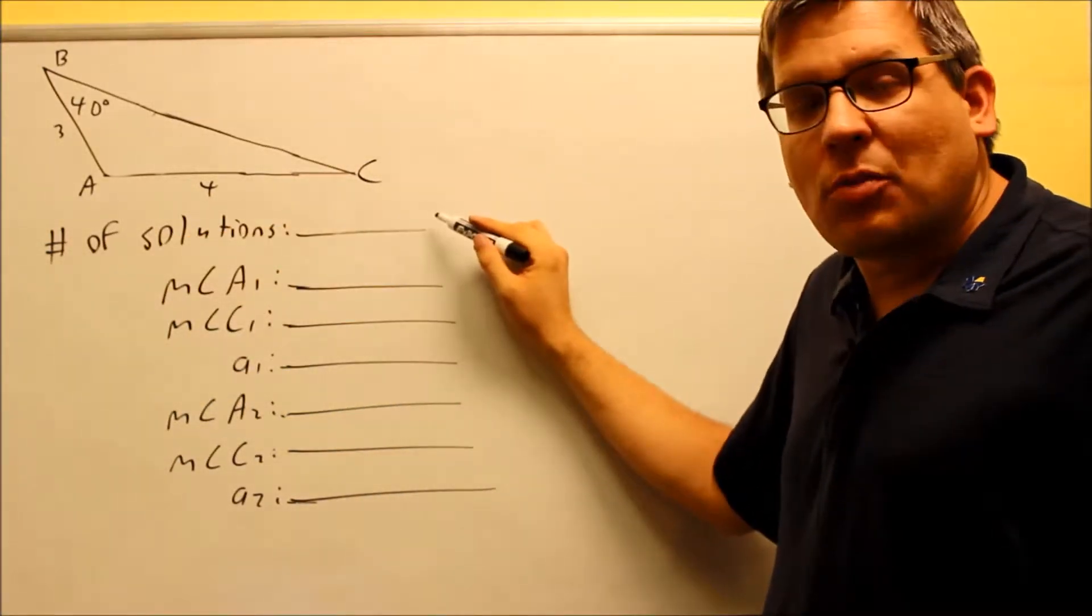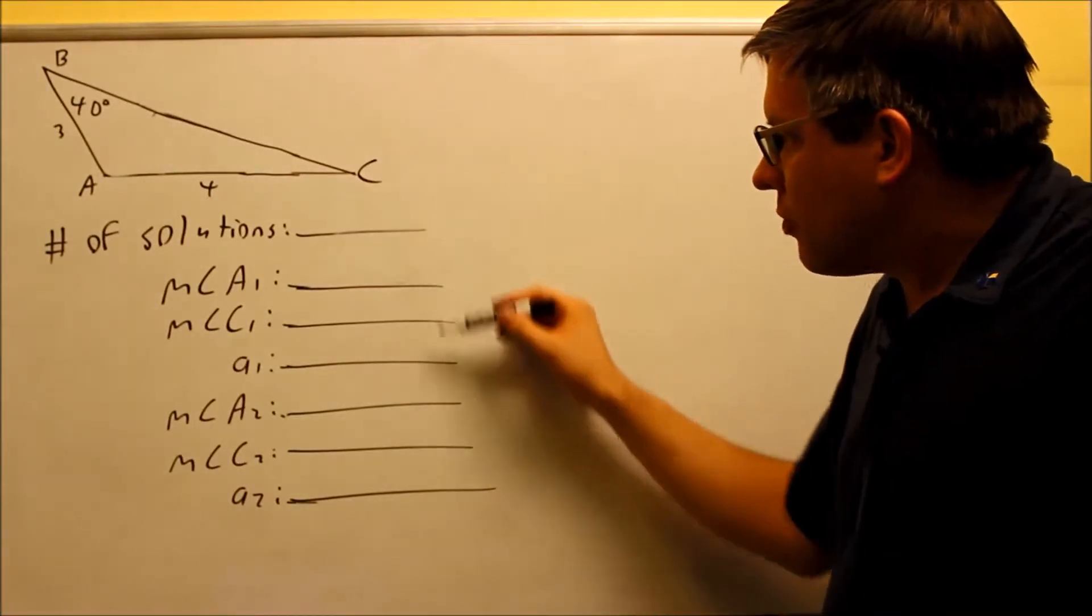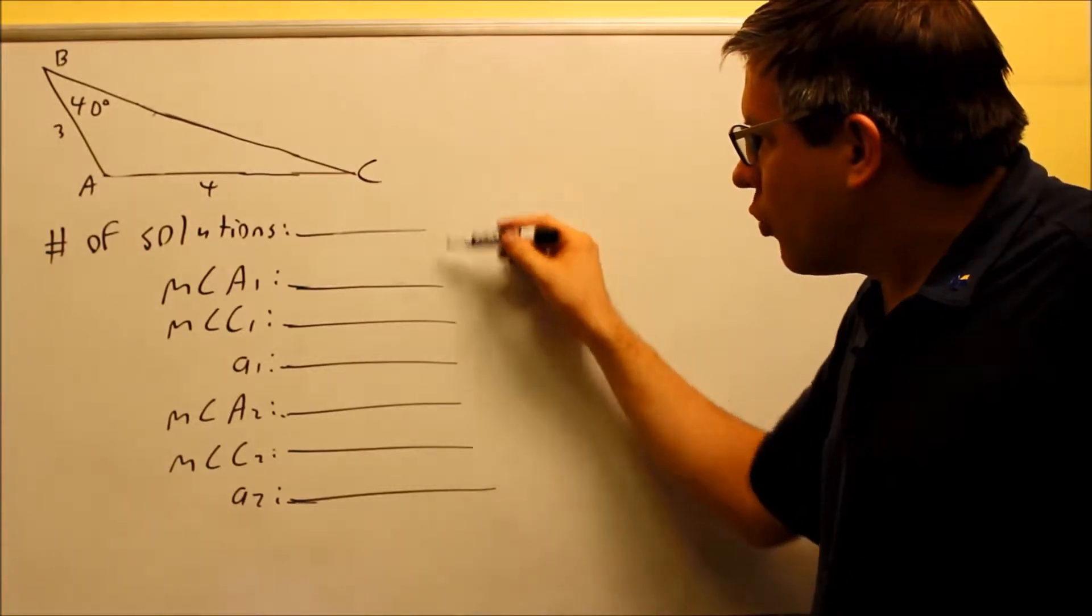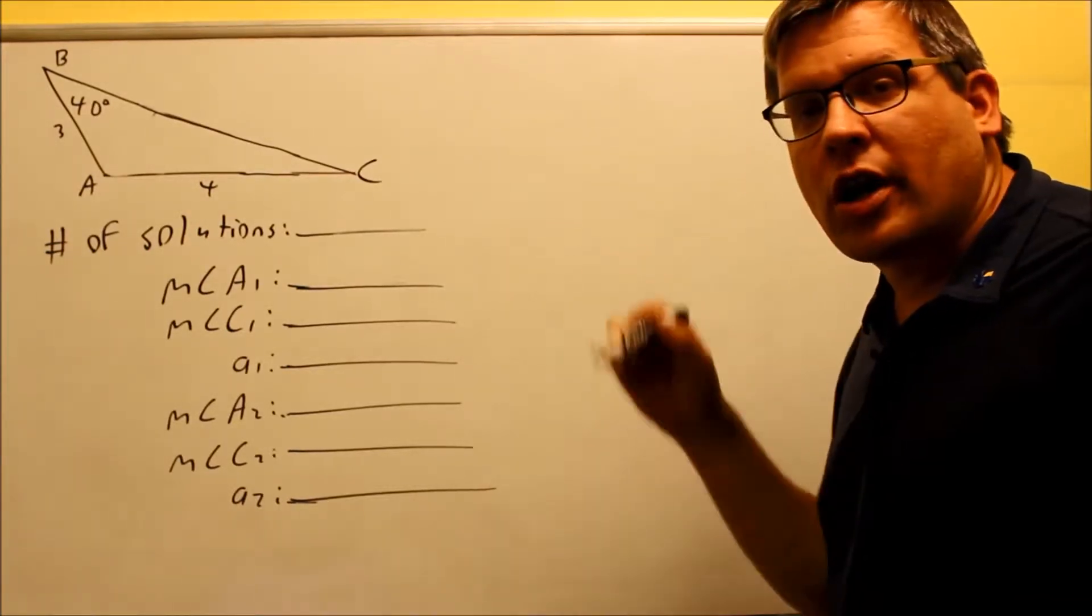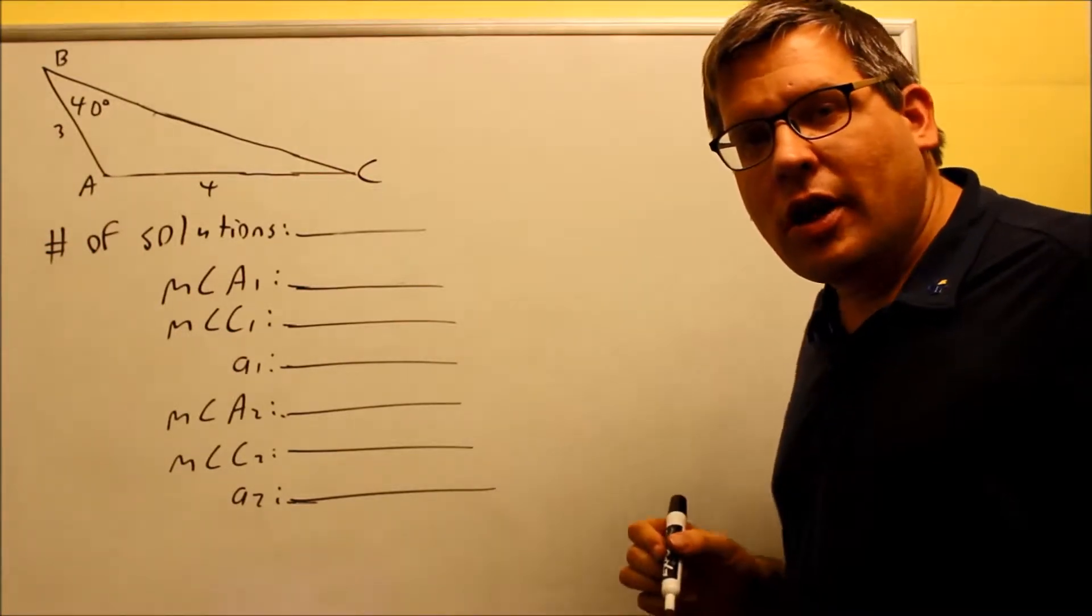We noticed that the first question says number of solutions. We want to find that. So on a test, you're probably going to have a question that has this. Now, you may or may not use all the blanks that are here. We don't know. By looking at the triangle, we're not going to know for sure how many solutions it has until we actually do the math and try it out.